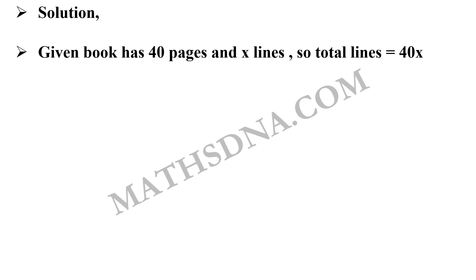Let us solve the question. As per the given data, there are a total of 40 pages in the book and each page has X lines. So the total number of lines will be 40X, because X lines are present on each and every single page.